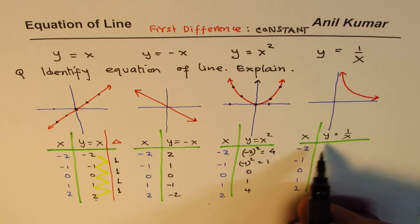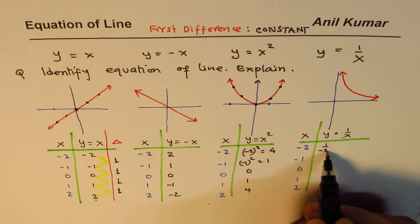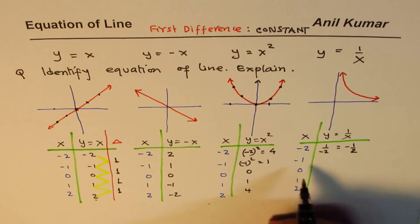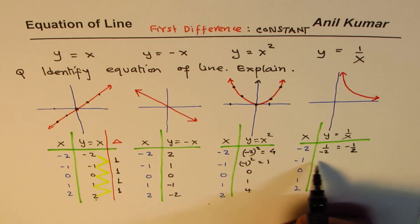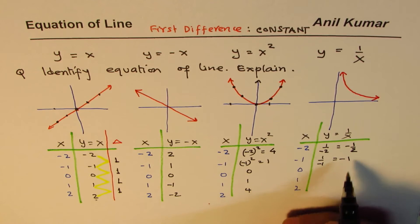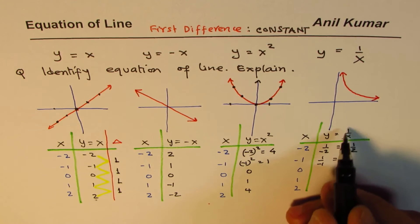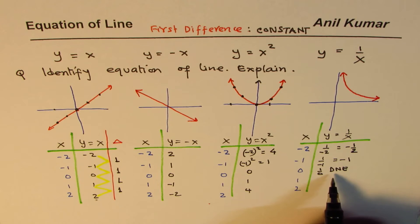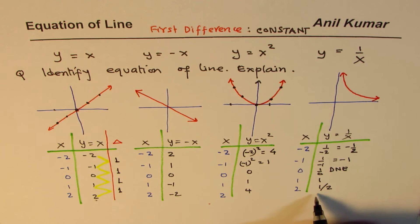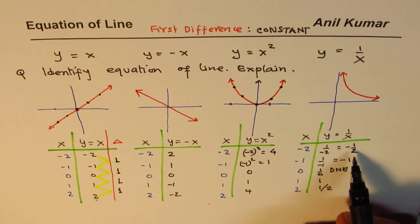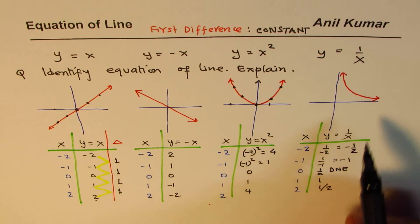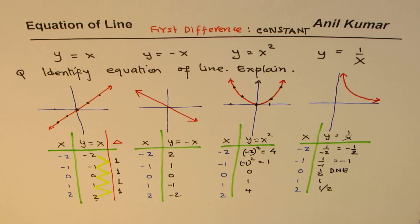Now let's look into 1 over X. If I write X as minus 2, Y equals 1 over minus 2, which is like minus half. If I write minus 1, so it has 1 over minus 1, which is minus 1. 0, well, I cannot divide by 0. 1 over 0 does not exist, and so that is not defined. And how about 1? 1 over 1 is 1, and 1 over 2 is half. So these are the values which we get here.